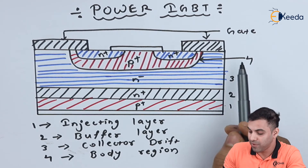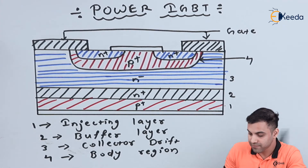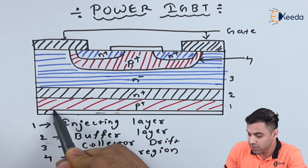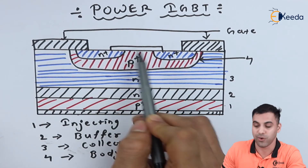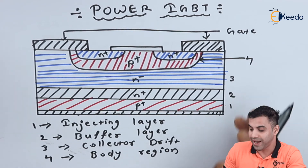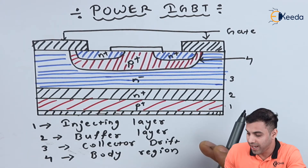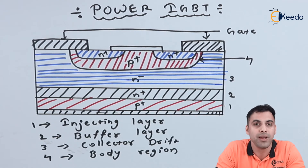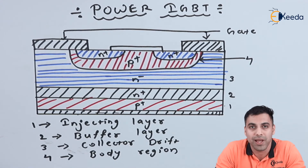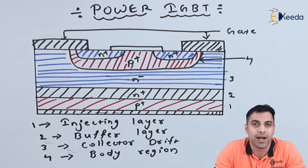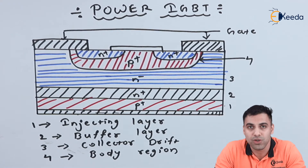Number one is the injecting layer, number two is the buffer layer, number three is the collector drift, and number four is the body region. The gate, collector, and emitter regions are all metal coated. This is the internal structure of a Power IGBT. Whenever we apply a gate signal and an external voltage to the collector-emitter terminal, with the application of enough gate voltage the IGBT conducts — withstanding extremely high current, blocking extremely high voltages, and operating at very high frequency.